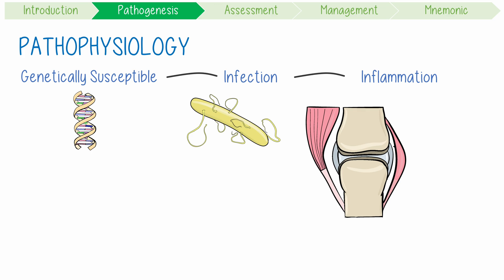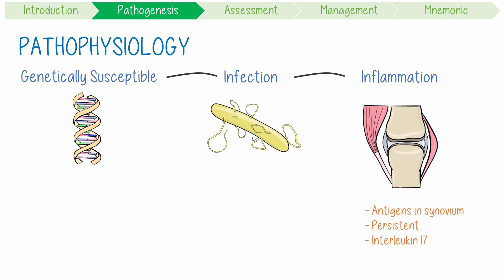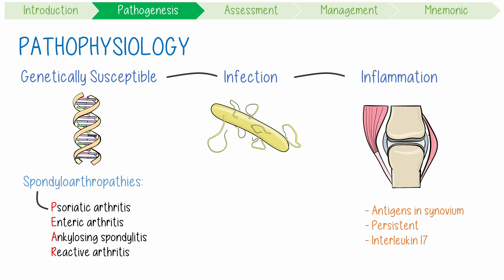However, it's evident that some bacterial antigens find their way into a joint synovium and then persist for long periods after an acute attack. The type of inflammation particularly associated with this disease involves high levels of cytokines like IL-17. Like other spondyloarthropathies — which can be called the PEAR diseases — there's one genetic risk factor, HLA-B27, which is associated with more severe and chronic disease.